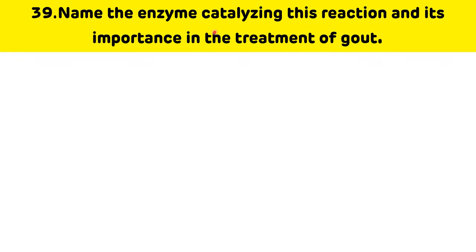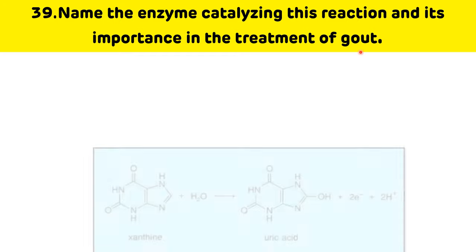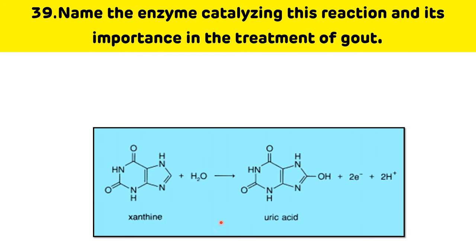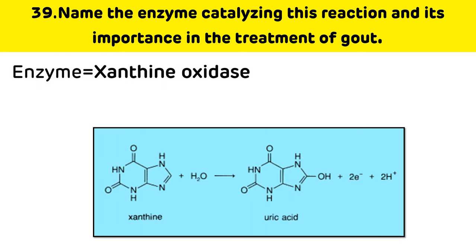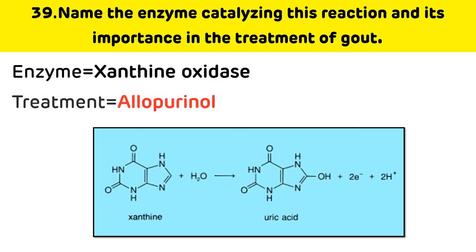Name the enzyme catalyzing this reaction and its importance in the treatment of gout. Xanthine is converted to uric acid by xanthine oxidase. This xanthine oxidase is competitively inhibited by allopurinol, which is used in the treatment of gout.